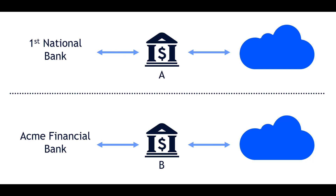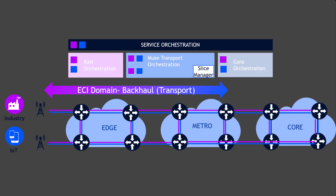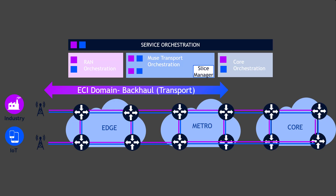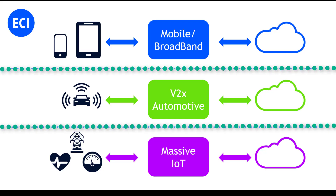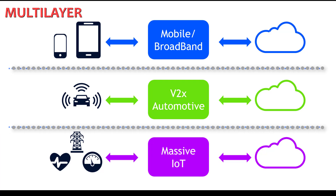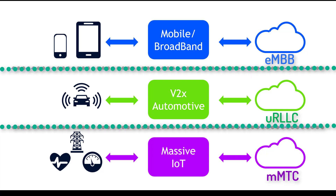Each use case can arise in addition to or in parallel with other use cases, thereby forming a multi-tenant-based solution that is hierarchical yet flexible. ECI's slicing mechanism addresses the slice resource assignment in a multi-layer approach, while guaranteeing that all related system resources are reserved to achieve the goals according to the policy defined.